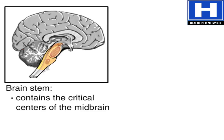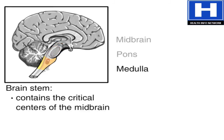The brainstem is located underneath the temporal lobes and extends down to the spinal cord. It is critical for survival, because it connects the brain with the spinal cord. The top portion of the brainstem is called the midbrain, a small portion located at the top of the brainstem. Just below the midbrain is the pons, and below the pons is the medulla.